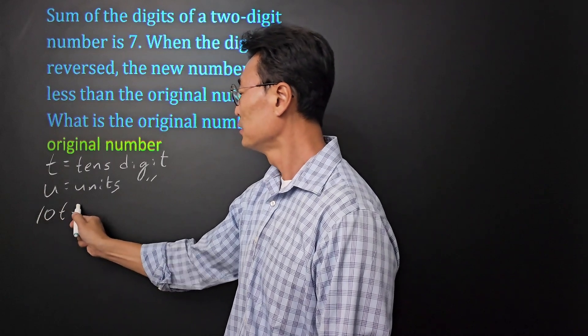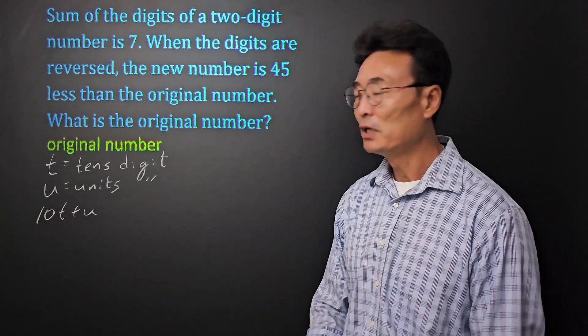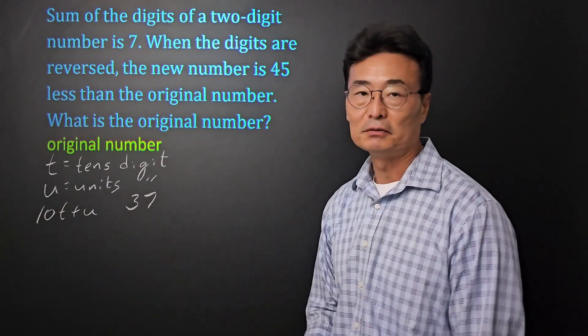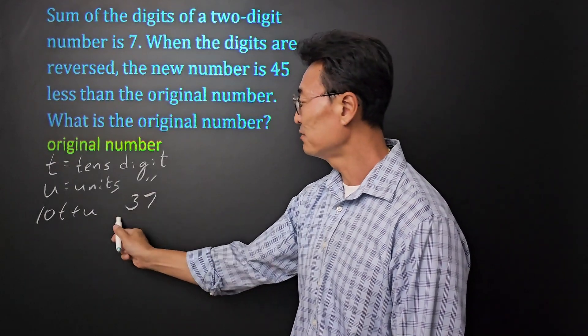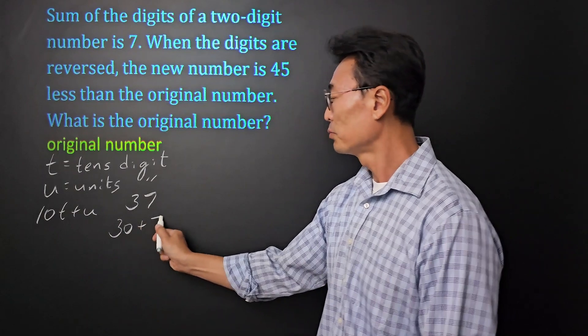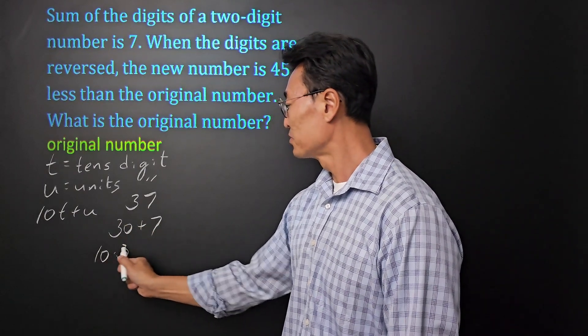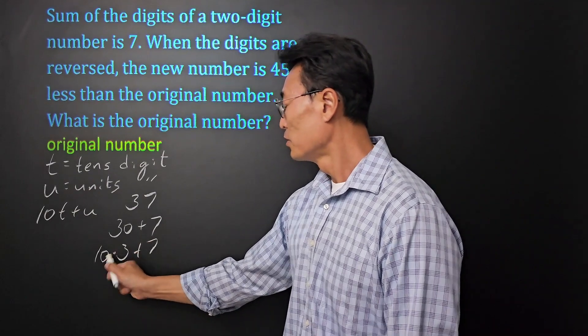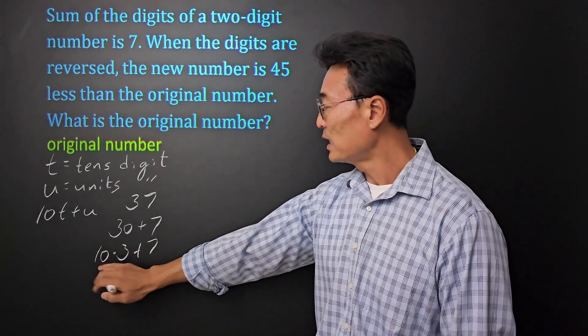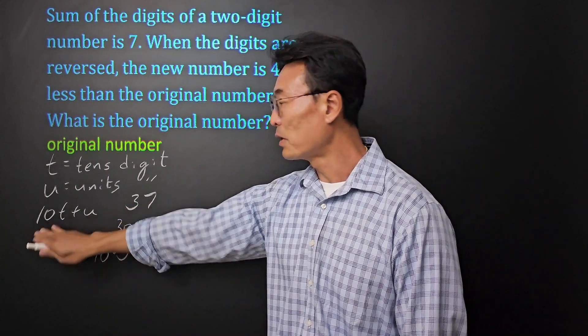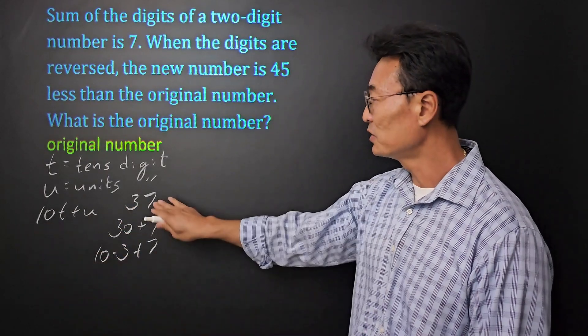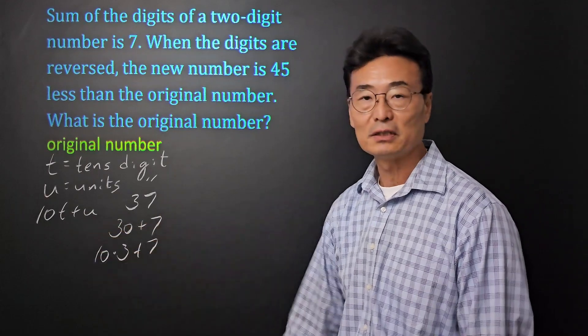For example, if we have 37, just an example, 37 is 30 plus 7, and 30 is the same thing as 10 times 3. So it's 10 times the tens digit, which is 3, and that's the reason why we have 10 times t, and the units digit 7 is just going to be the u.